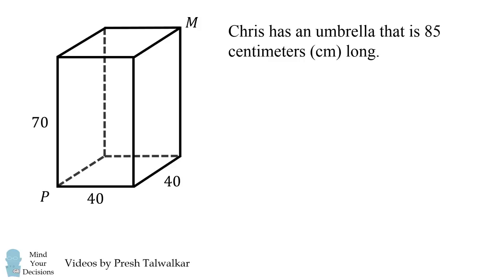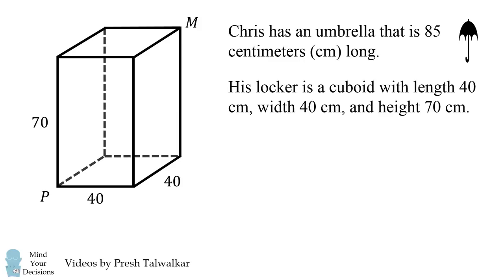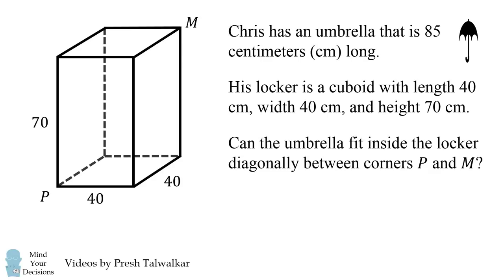Chris has an umbrella that is 85 centimeters long. His locker is a cuboid with length 40 cm, width 40 cm, and height 70 cm. Can the umbrella fit inside the locker diagonally between corners P and M, which are opposite corners of the cuboid?